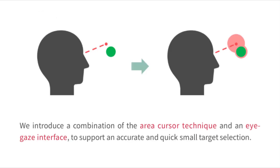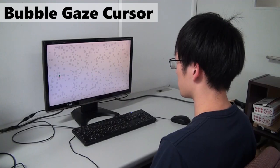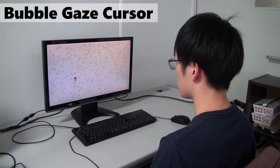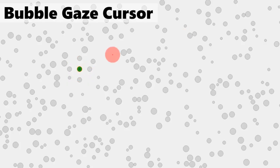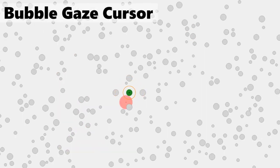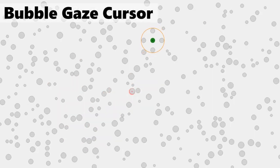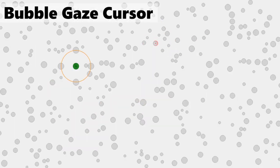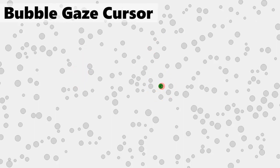We introduce a combination of the area cursor technique and an eye gaze interface to support accurate and quick small target selection. The bubble gaze cursor is a combination of the eye tracking interface and the bubble cursor, which is a circular area cursor that keeps changing the cursor size dynamically to always contain only one target.